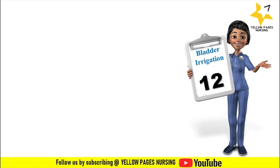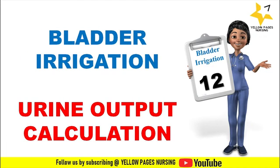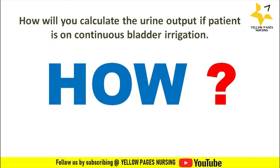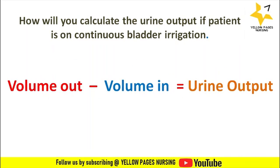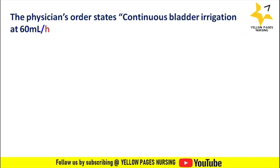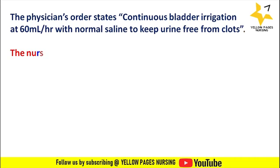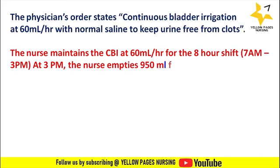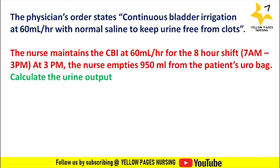First comes bladder irrigation urine output calculation. How will you calculate the urine output if a patient is on continuous bladder irrigation? The formula is: volume out minus volume in equals urine output. For example, the physician's order states continuous bladder irrigation at 60 ml per hour with normal saline to keep urine free from clots. The nurse maintains the CBI at 60 ml per hour for the 8-hour shift, 7 AM to 3 PM, and empties 950 ml from the patient's urine bag.